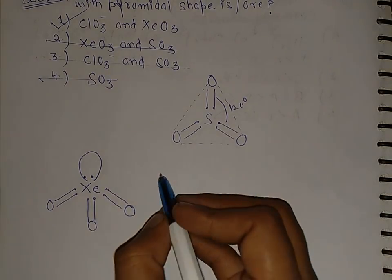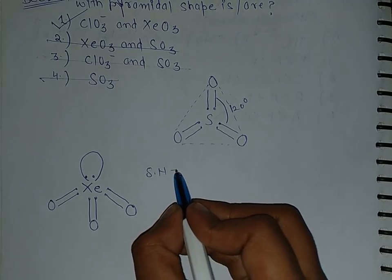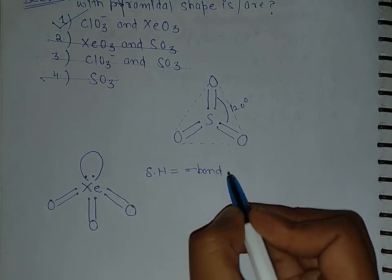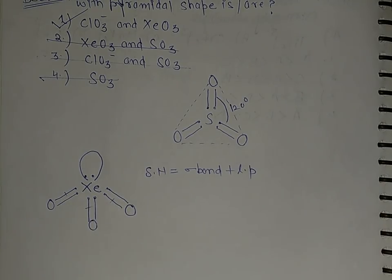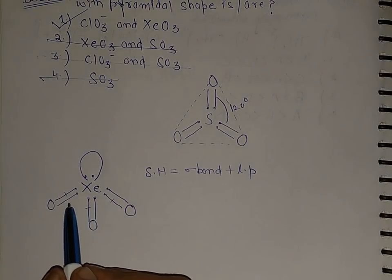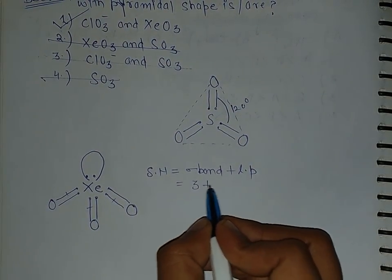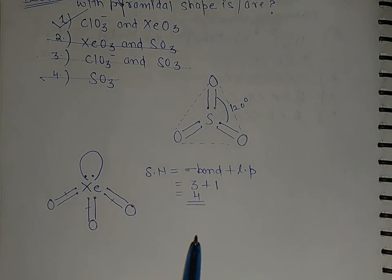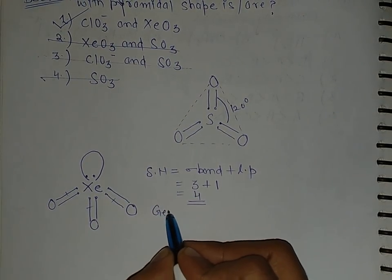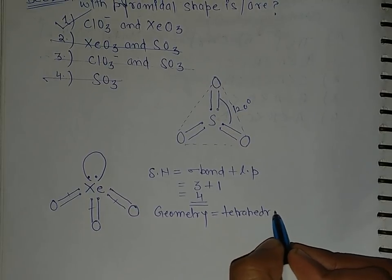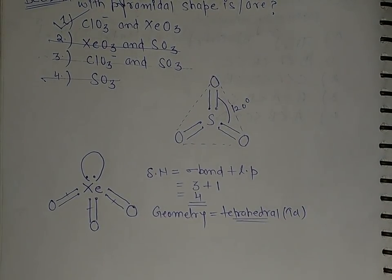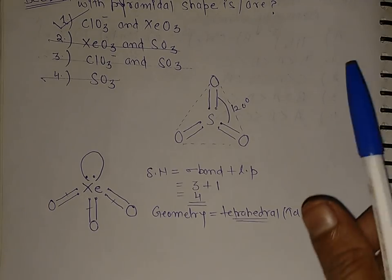To calculate the steric number: steric number equals sigma bonds plus lone pairs. In XeO3, each double bond has one sigma and one pi, so there are three sigma bonds plus one lone pair, giving a steric number of four. A steric number of four means the geometry is tetrahedral.